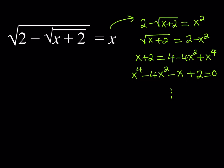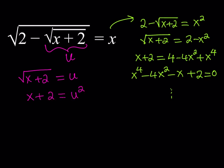Taking advantage of the symmetry here, I'm going to call this expression u. According to this assumption, the square root of x plus 2 is named u, which means x plus 2 can be written as u squared. Then, by naming that inner radical u, we get another equation: the square root of 2 minus u is equal to x — kind of like a chain reaction with the nested square root.